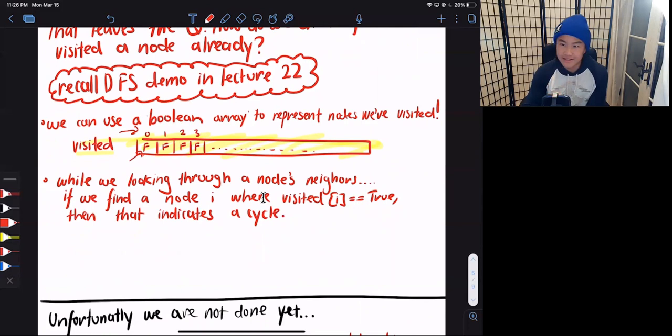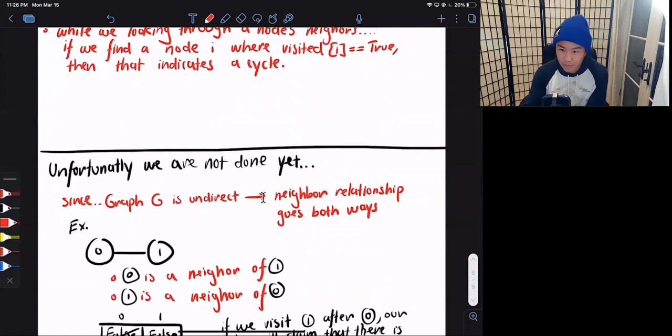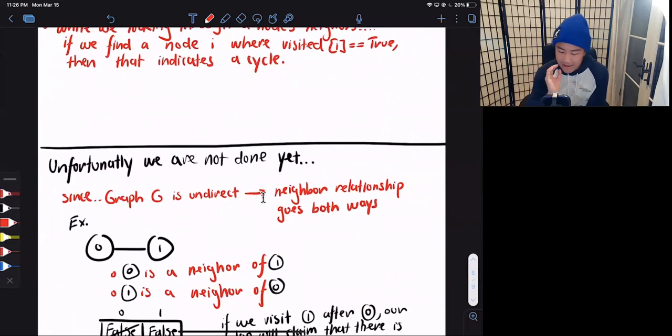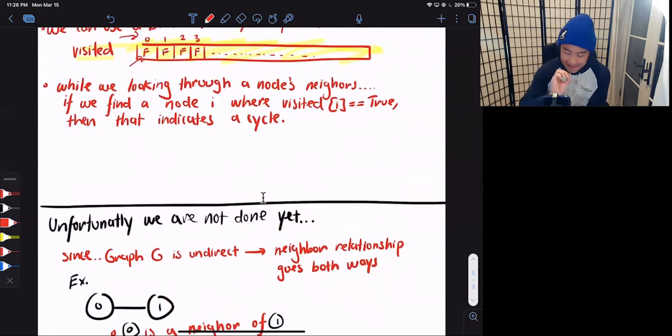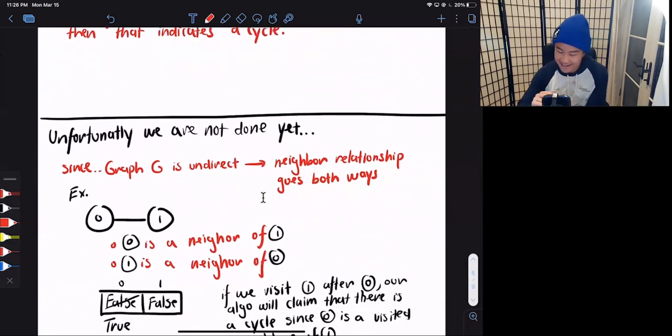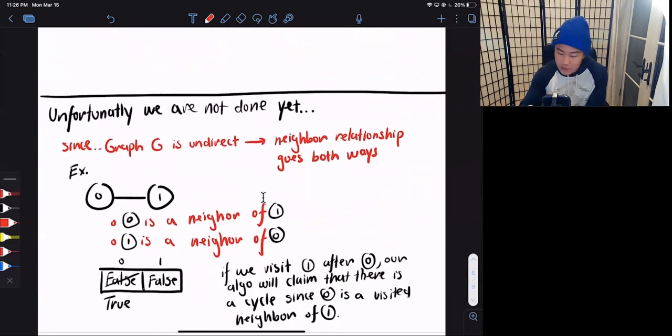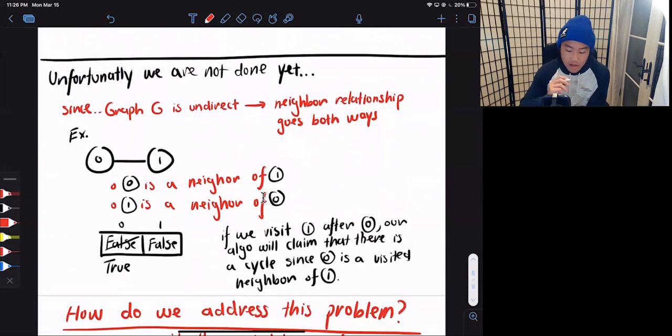This would work perfectly for a directed graph. But unfortunately, in this problem, we have a graph that is undirected. And so if a graph is undirected, that means that the neighbor relationship actually goes both ways. We can go from 0 to 1, and we can also go from 1 to 0. So in this example, 0 is a neighbor of 1, while 1 is also a neighbor of 0.